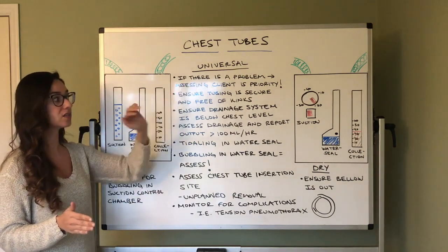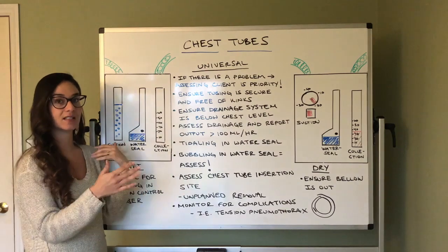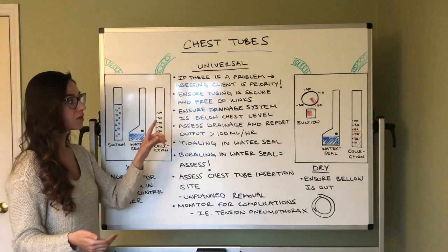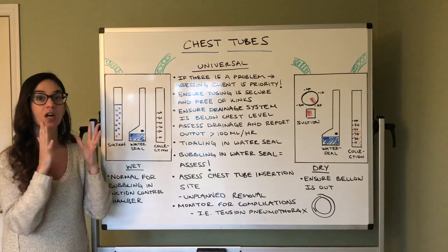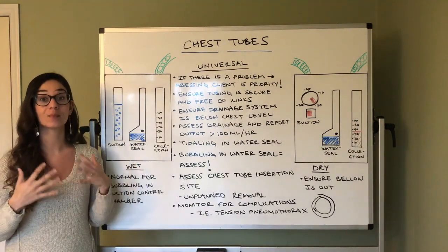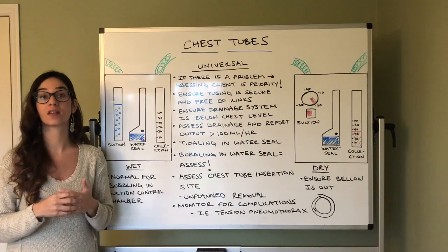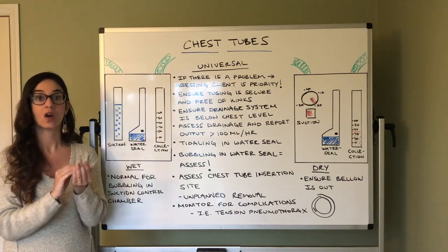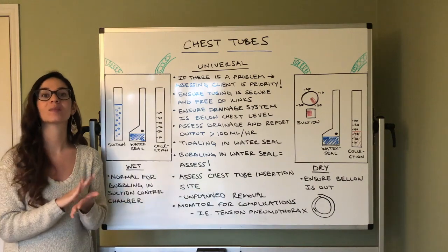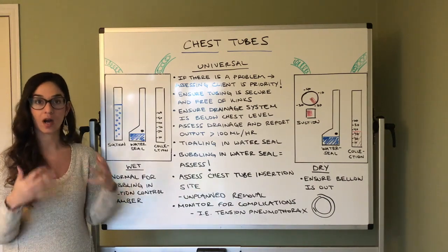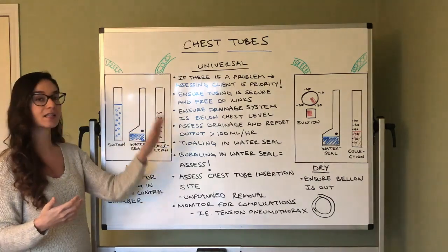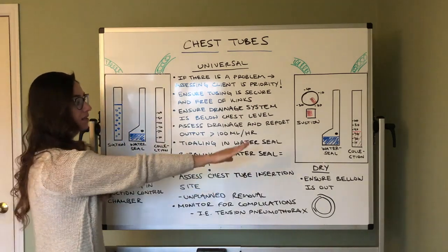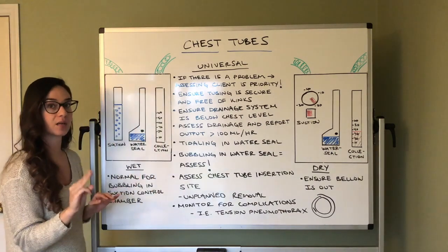Now we're going to talk about nursing interventions — what we have to do to maintain these systems and what could show signs of problems. Your respiratory system is sterile, so when chest tubes are placed by the healthcare provider, it is done sterilely. Anytime you change a dressing around a chest tube site, use sterile dressings. These devices, regardless of wet or dry suction, each have three chambers you need to understand.